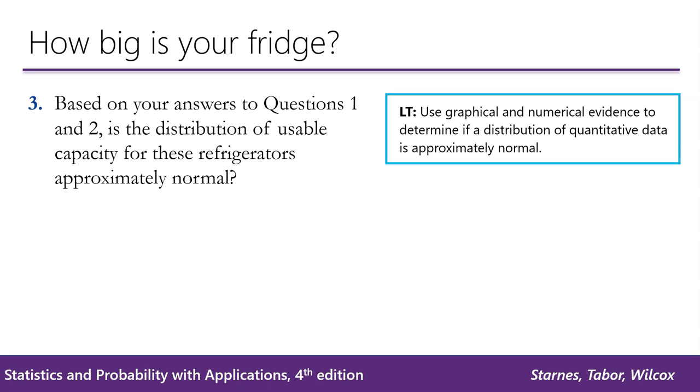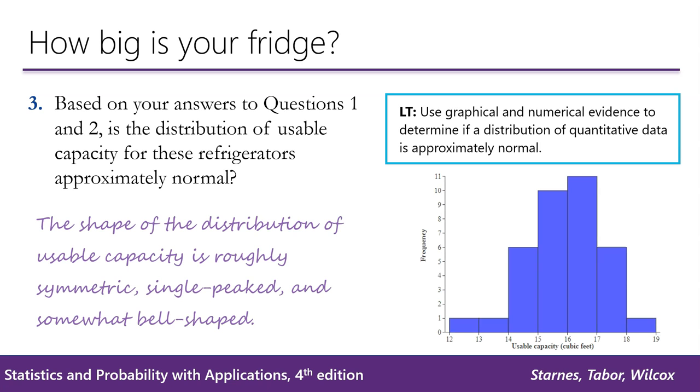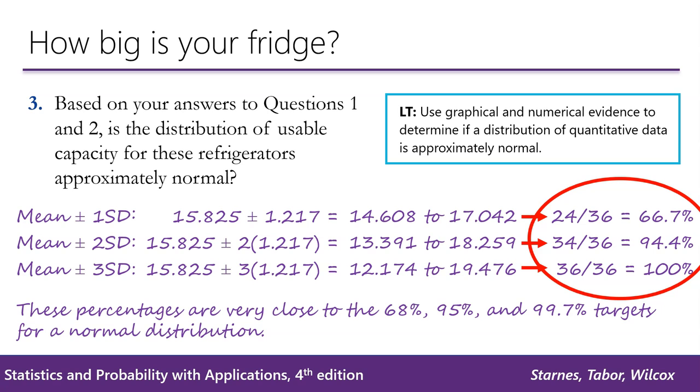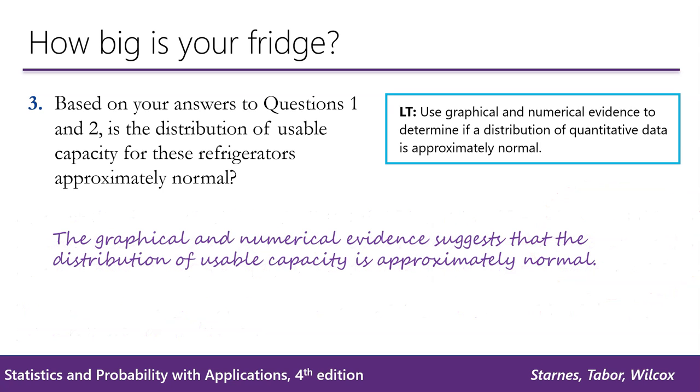Based on your answers to questions 1 and 2, is the distribution of usable capacity for these refrigerators approximately normal? Well, we originally said that the distribution is roughly symmetric, single-peaked, and somewhat bell-shaped, and then we saw that the percentages are very close to 68, 95, and 99.7. So we can say that the graphical and numerical evidence suggests that the distribution of usable capacity is approximately normal.